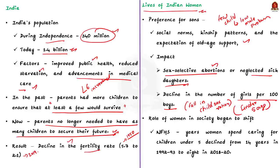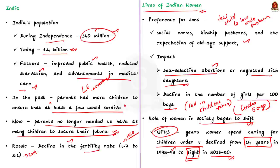On the other hand, when fertility rates declined, the role of women in society began to shift. Women now care for fewer children, giving them more opportunities for education and employment. Research shows a decline in the number of years women spent caring for young children. According to the National Family Health Survey, the number of years women spent caring for children under five declined from 1992-93 to 2018-20. Despite this, early marriage and childbearing continue to significantly shape women's lives in India.